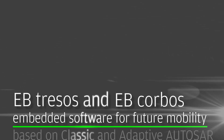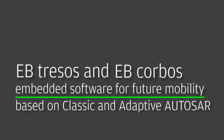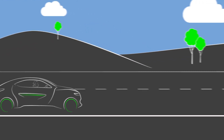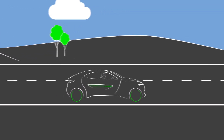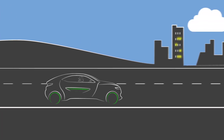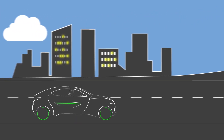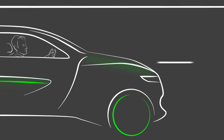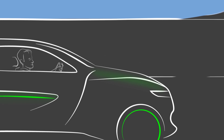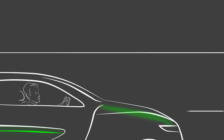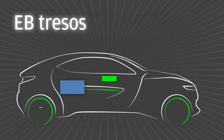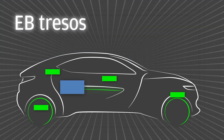EB Tresos and EB Corbos — embedded software for future mobility. Safety, security, performance, and environmental friendliness are important factors for drivers. OEMs are faced with the need to meet high quality standards to keep up with increased software complexity and to fulfill stringent requirements for fail-safe and secure products. EB Tresos is the ideal solution to meet these ongoing demands.